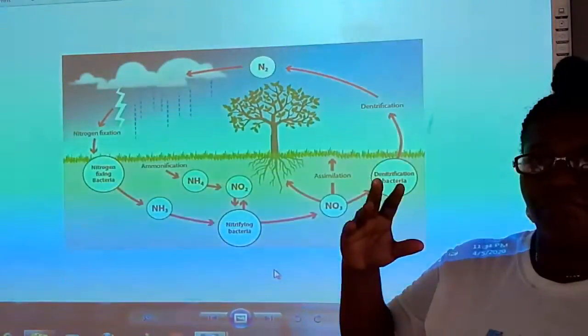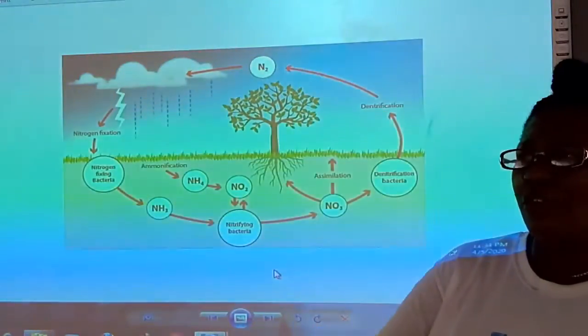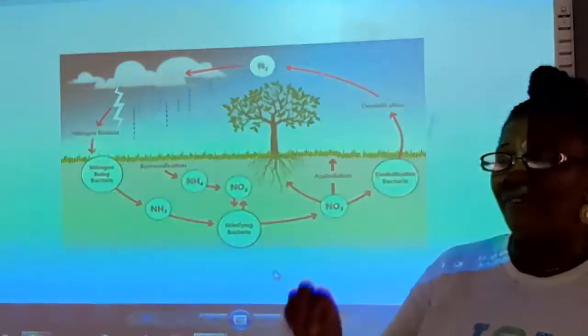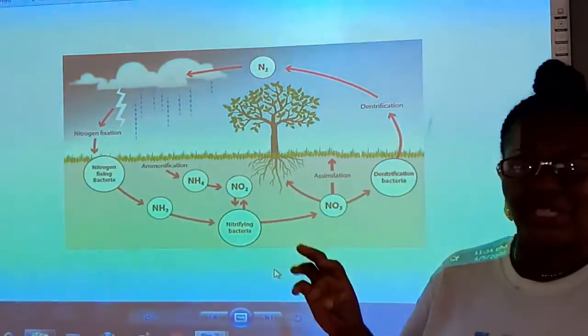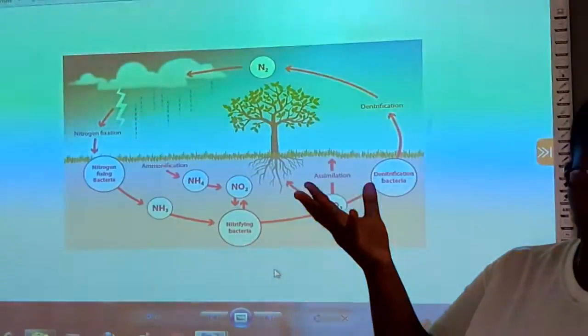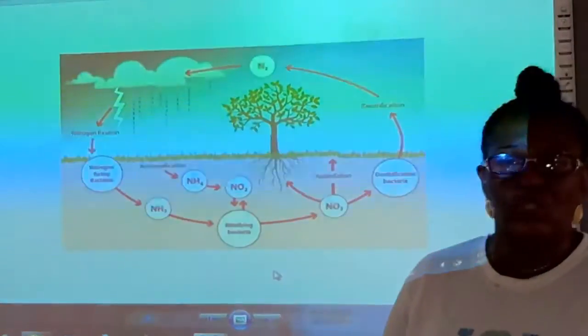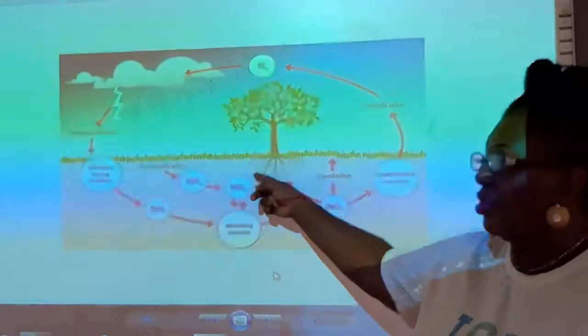Let's start from thunderstorms and rains. Whenever you see a flash in the sky during thunderstorms and rain, you have the release of nitrogen into the air. This nitrogen reacts with the oxygen in the air and eventually dissolves in the rainwater that is coming down to become nitrous. It comes down to the soil.